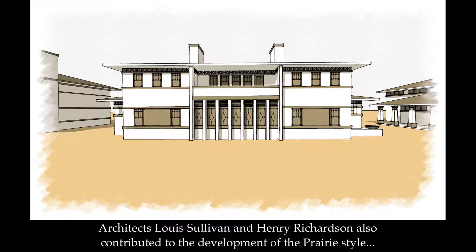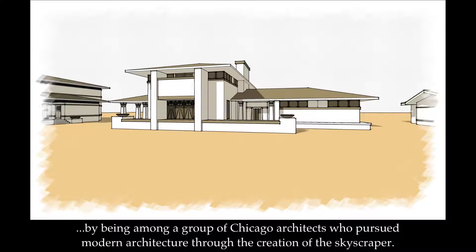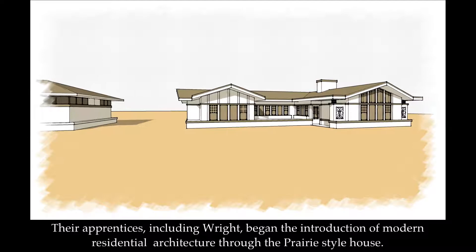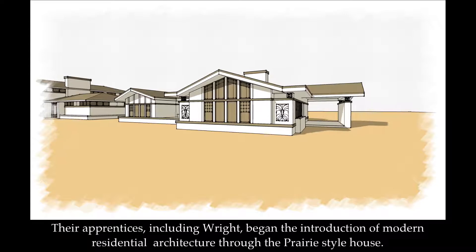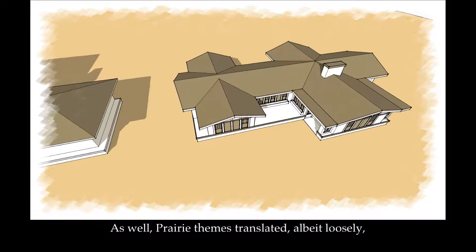Architects Louis Sullivan and Henry Richardson also contributed to the development of the prairie style by being among a group of Chicago architects who pursued modern architecture through the creation of the skyscraper. Their apprentices, including Wright, began the introduction of modern residential architecture through the prairie-style house. Prairie architecture greatly influenced the subsequent craftsman style, which became one of America's most prolific residential fashions.